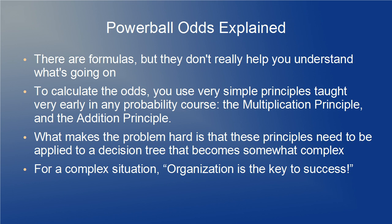There are a couple of ways to calculate the odds, and some people like to use formulas, but I think a better way for someone who really wants to understand the logic behind these calculations is to use the simple principles you learn very early in any probability course: the multiplication principle and the addition principle. What makes it hard to derive these odds is that these principles need to be applied to a decision tree that becomes somewhat complex. When dealing with any complex situation, organization is the key to success.